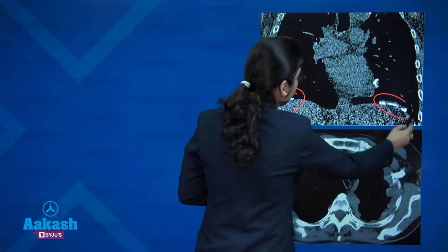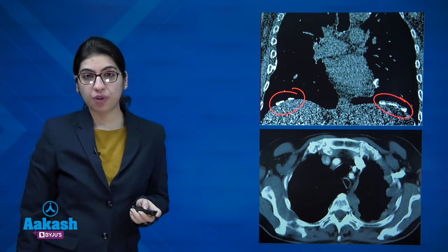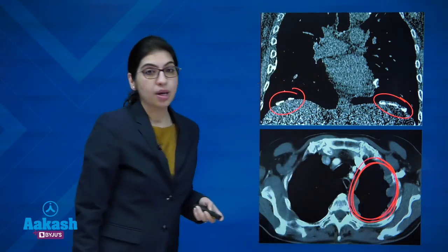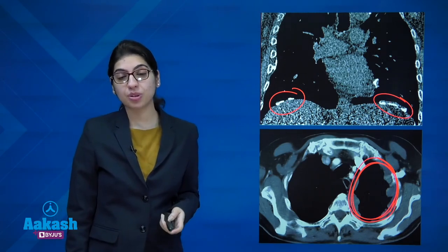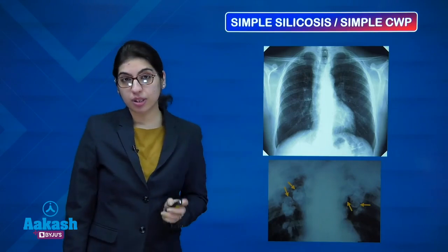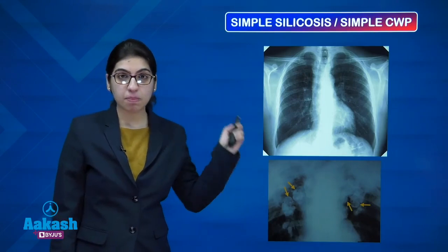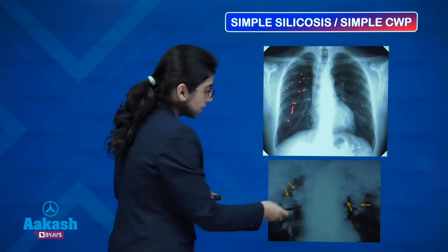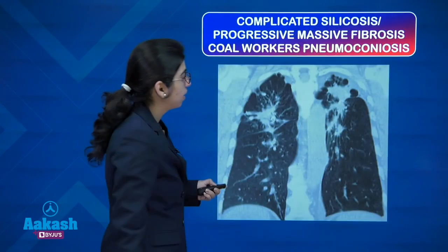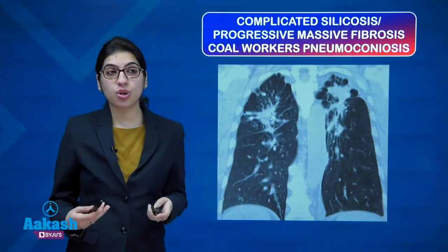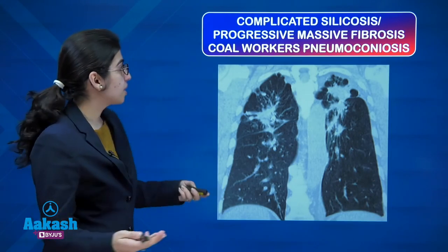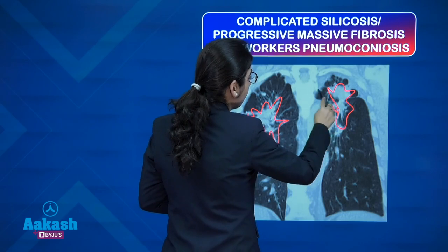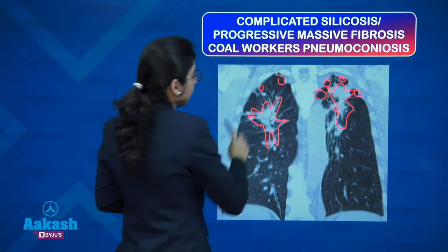The most specific feature of asbestosis is bilateral calcified pleural plaques along the diaphragmatic pleura. Concentric circumferential pleural thickening of more than 1 cm is the most specific feature of mesothelioma — the carcinoma associated with asbestosis. In simple silicosis or coal workers' pneumoconiosis, there are tiny nodules and axial calcification in nodes. When complicated, it becomes progressive massive fibrosis, with large fibrotic masses in the upper lobes and emphysematous changes in the periphery.